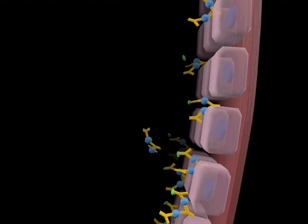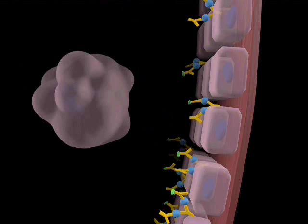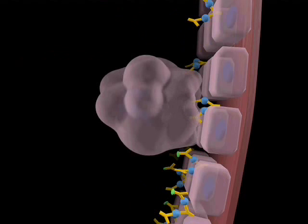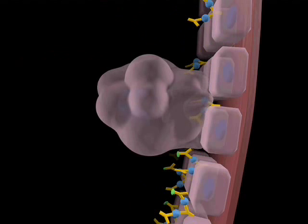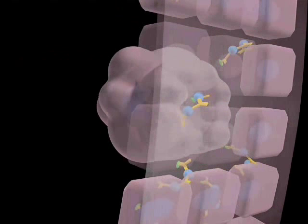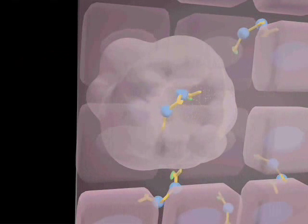Macrophages then attempt to phagocytose these complexes as they would bacteria. As these complexes are deposited on the basement membrane, the macrophages are unable to extend their pseudopodia around them. The macrophages then degranulate, releasing destructive lysosomal enzymes into the gap, damaging the basement membrane. This process is known as frustrated phagocytosis.